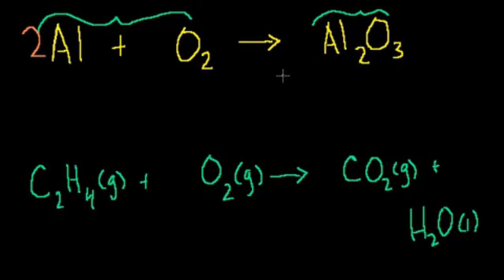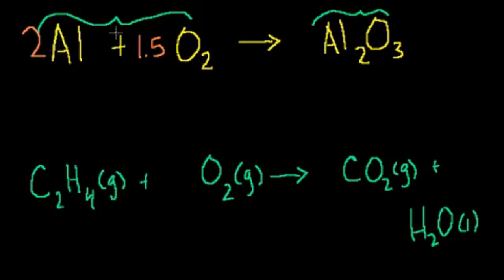Now let's look at the oxygen. Here I have two oxygens on the left-hand side of the equation, and on the right-hand side I have three oxygens. If I could have half atoms, I could multiply this by 1 and a half — 1.5 times 2 is 3. So now I have three oxygens on both sides and two aluminums on both sides. But you can't have half an atom or 1 and a half of an atom — that's not cool.